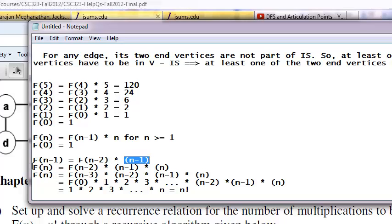And then I can substitute for f(n-1) over here and say f(n) is going to be f(n-2) times (n-1), basically coming from f(n-1) plugged in this part times this n.